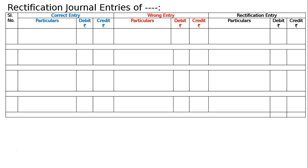The first error: the total of one page of the purchase book was overcast by one thousand. The correct entry should be purchase account debited to creditors account — say three thousand to three thousand.